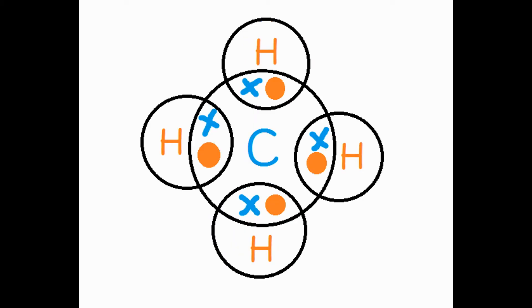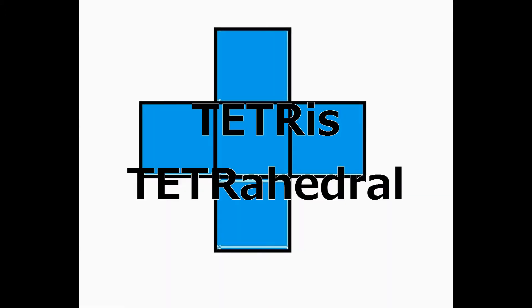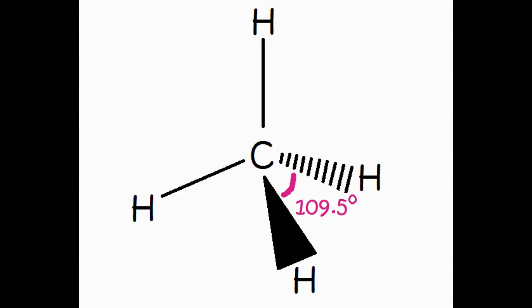Now we have methane, which is an example of a molecule that has four bonding pairs and no lone pairs. The shape that these molecules take is called tetrahedral, which I remembered because the shape reminded me of the Tetris piece, but then the other day I played Tetris and realized that there isn't actually a shape in Tetris that looks like that. But anyway, this is how you draw the molecule and the angle is 109.5 degrees.